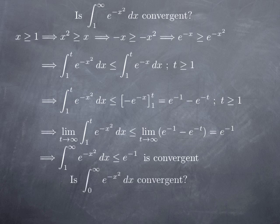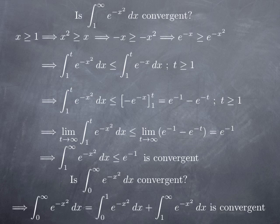What if instead we had the integral from 0 to infinity of e to the negative x squared? We couldn't do exactly the same calculation, because we started from the assumption that x is greater than 1, which gave us a way to compare the two functions for x greater than 1. But this is not a problem: the integral from 0 to infinity is simply the integral from 0 to 1 plus the integral from 1 to infinity. Since the integral from 1 to infinity is convergent, and e to the negative x squared is continuous so the integral from 0 to 1 is a finite number, the sum is also convergent.